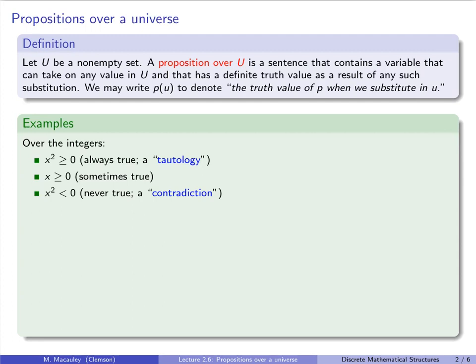The second example is x ≥ 0. This is not always true over the integers, but for any substitution it is either true or false. So it is still a proposition over the integers — it's just sometimes true. Finally, consider x² < 0. This is never true over the integers, so it is a contradiction.